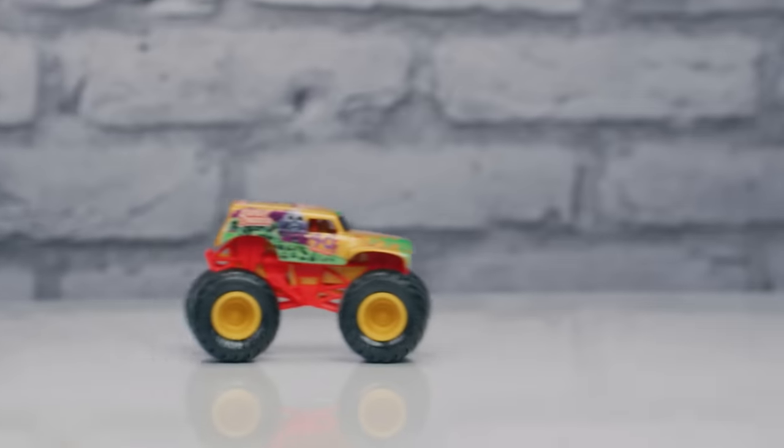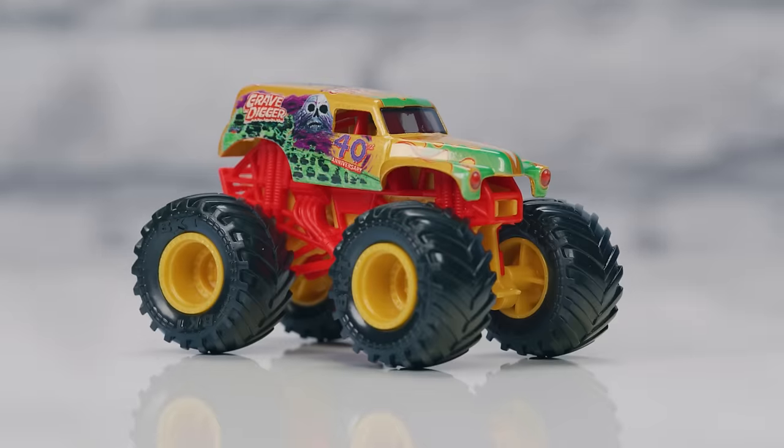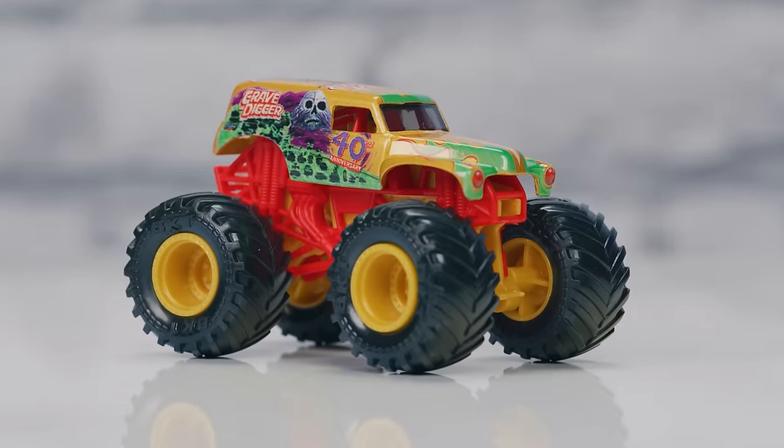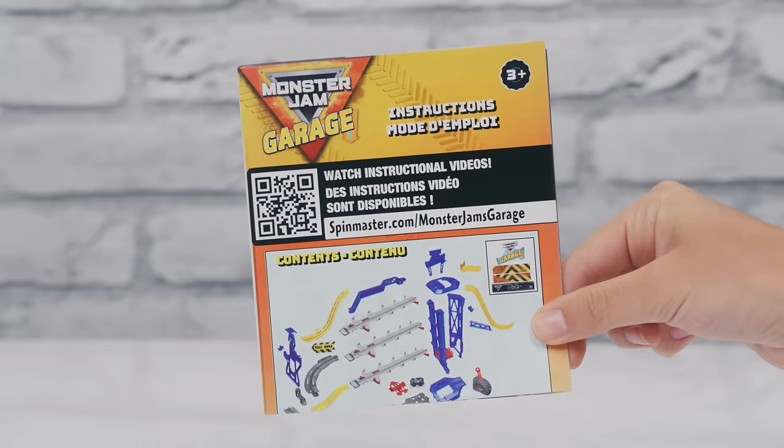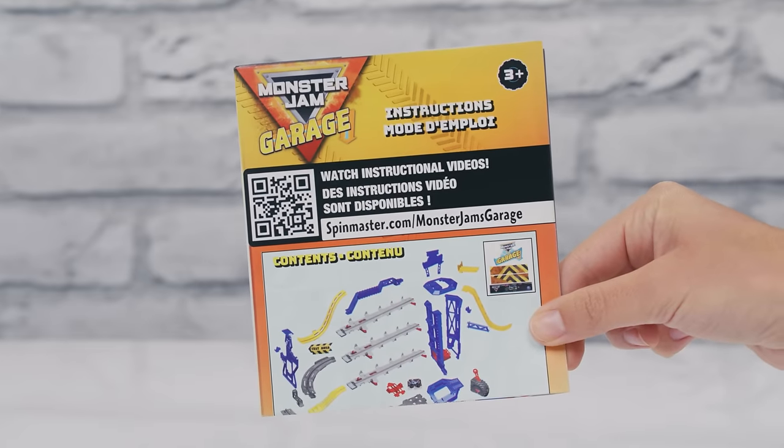A sticker sheet and an exclusive 1:64th Gold Grave Digger truck. Make sure you don't throw away the instruction sheet. It shows the step-by-step process of how to assemble the garage.